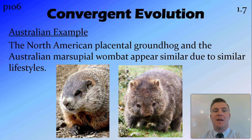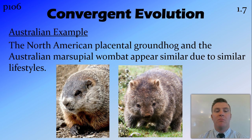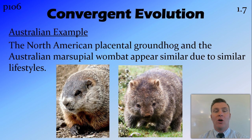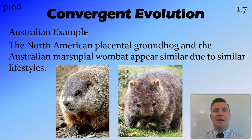An Australian example of convergent evolution would be the marsupial wombat found in Australia being very similar to the placental groundhog found in North America. Both are burrowing animals that forage on the ground and are herbivorous. Through convergent evolution, despite not having a common ancestor, because of their similar lifestyles and similar niche within the environment, they have evolved to look fairly similar.